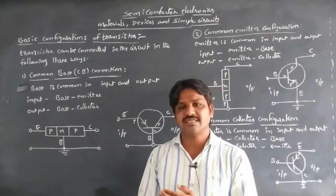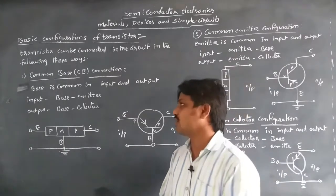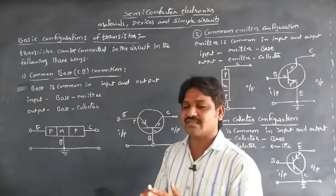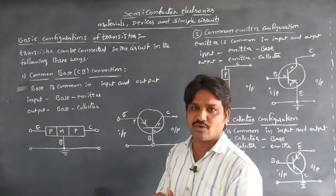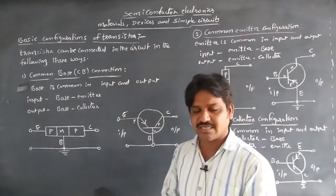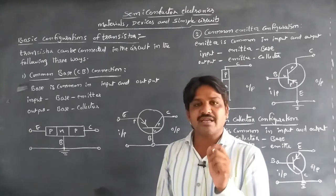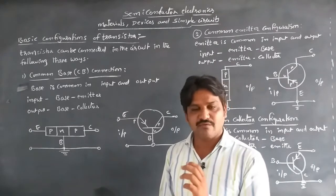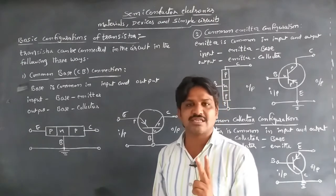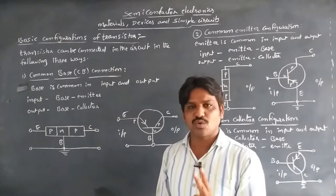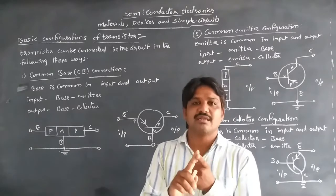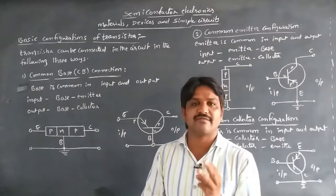Since we need four terminals but the transistor has only three, to overcome this problem one of the terminals is commonly used for both the input and output by grounding it. We need two terminals for the input and another two terminals for the output.